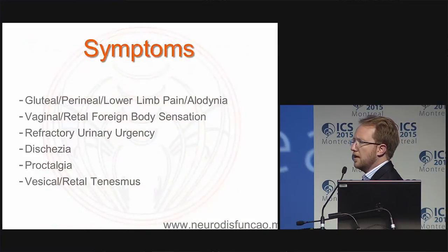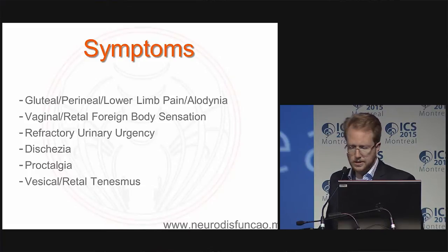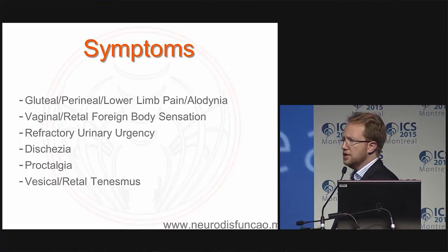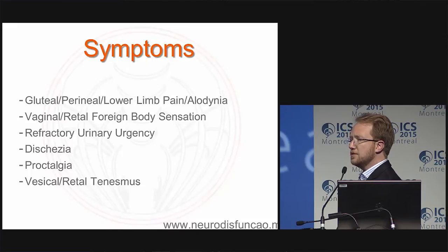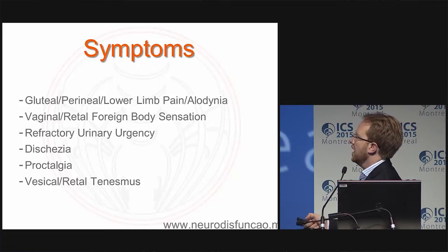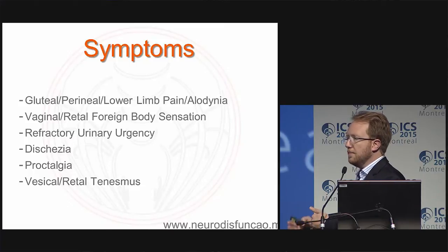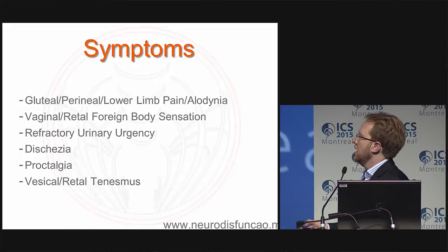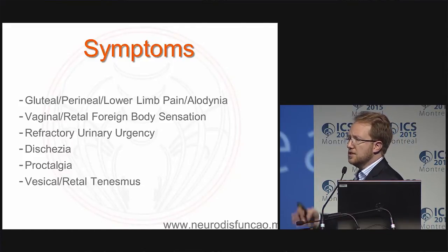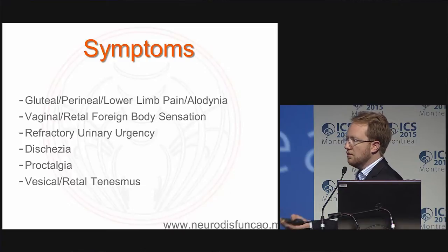All of those nerves are subject to intra-pelvic entrapment. We have presented our initial series of 29–30 cases and are now at 50 cases. The most common cause is endometriosis, followed by vascular entrapment, fibrosis, and malformations of the piriformis muscle. Symptoms include sciatica or perineal pain, usually associated with lower urinary tract symptoms — either sensory urgency or motor urgency depending on the point of entrapment. If entrapment is before the emergence of the pelvic splanchnic nerves, you get motor urgency and detrusor overactivity; if after, you get only sensory urgency.